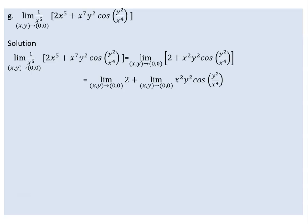We use the rule that the limit of a sum of two functions is the sum of the limits. So we split into: limit of 2 as (x,y) → (0,0), plus limit of x²y² cosine(y²/x⁴) as (x,y) → (0,0). The limit of the constant function 2 is simply 2.